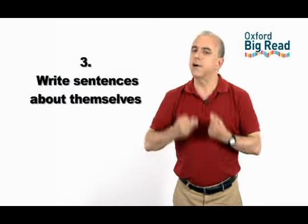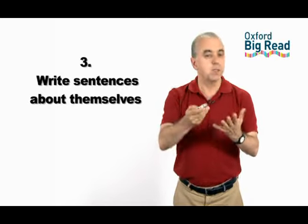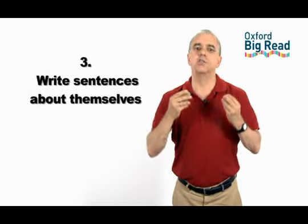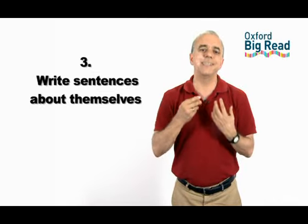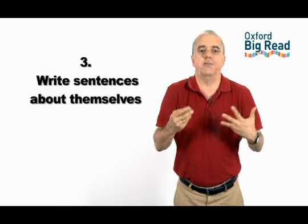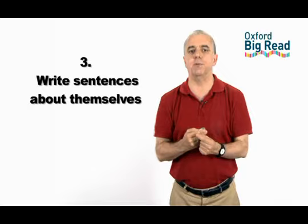Then ask them to write five similar sentences about themselves. For example, they could write about Tom Sawyer: Tom lives in the USA, and then write a sentence about where they live: I live in Turkey. The information is different, but the sentences are similar.